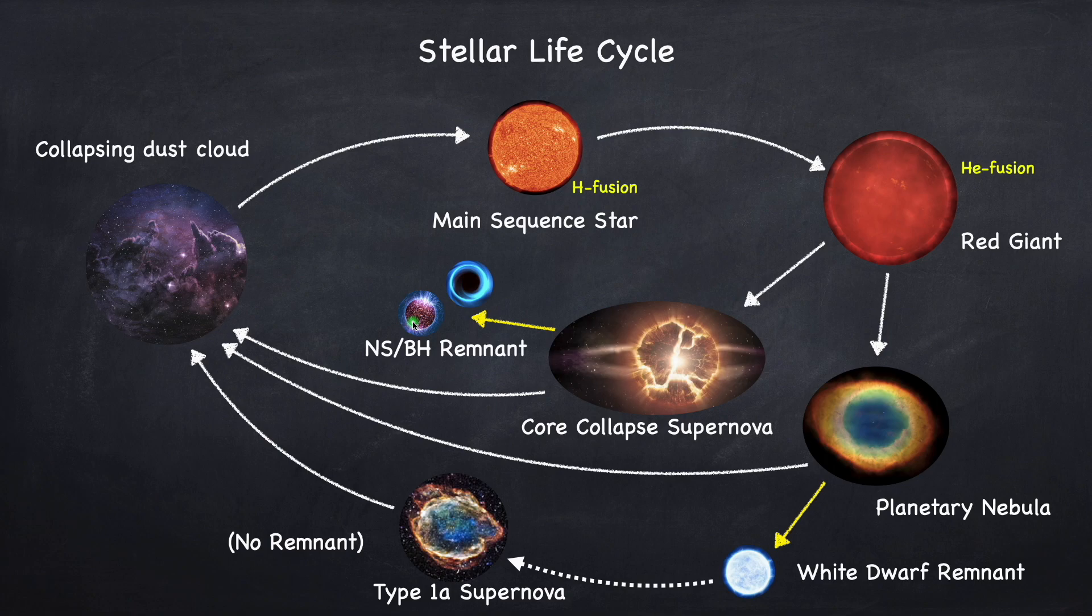If the star is not massive enough to fuse all the way to iron, then fusion will stop somewhere between carbon and iron, and the star will shed its outer layers in what's called a planetary nebula and leave behind a white dwarf remnant. If this white dwarf manages somehow to accrete some mass and exceeds what's called the Chandrasekhar mass, which I covered in Stellar Physics 4D, it will explode in what's called a Type Ia supernova. And finally, all of the gas released, either in the core collapsed supernova, the planetary nebula, or the Type Ia supernova, will eventually find its way back into another collapsing dust cloud, and the whole cycle starts once again.